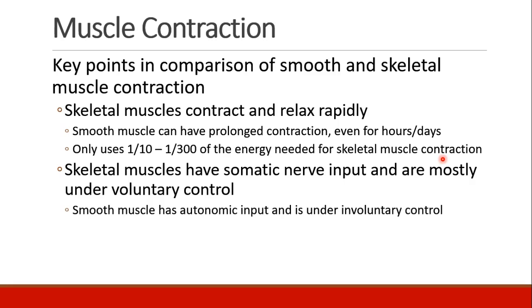I just want to end this section by highlighting only a couple key differences between smooth and skeletal muscle contraction. Skeletal muscles are the muscles that we think of when we move our limbs or breathe or run, and they can contract and relax very rapidly. Smooth muscles, on the other hand, which are located in organs and tissues and especially in blood vessels and the bronchi, can have a prolonged contraction even for hours or days at a time. In order to achieve this, smooth muscles use somewhere between a tenth and a three hundredth of the energy needed compared to what a skeletal muscle would need for contraction.